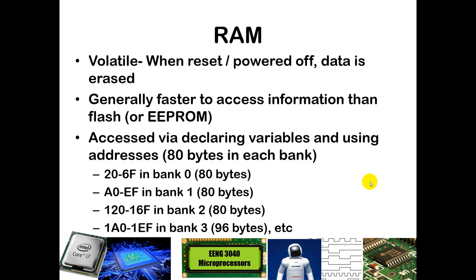RAM is volatile, so when you press the reset button, the master clear button, or cycle power, the data is erased and all special function registers return to their default values. RAM is generally faster than flash to access and significantly faster than EEPROM. We have 80 bytes available in each of our banks where variables can be stored. The addresses for the first four banks are: 20h through 6Fh in bank 0, A0h through EFh in bank 1, 120h through 16Fh in bank 2, and 1A0h through 1EFh in bank 3.